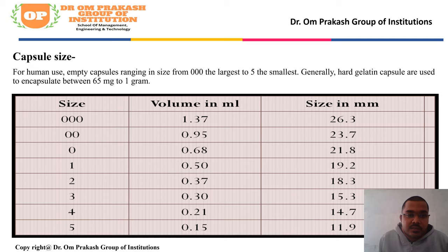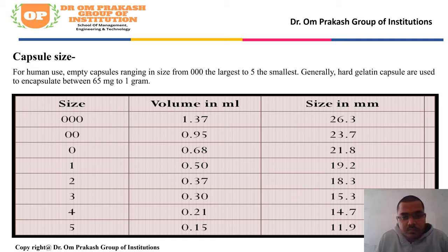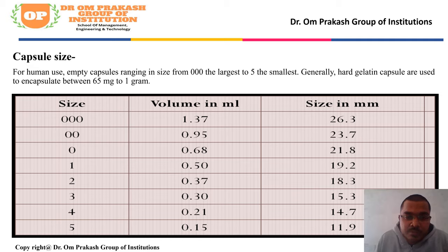The next point is capsule size. In the table, the capsule sizes mentioned are 000, 00, 0, 1, 2, 3, 4, and 5. The volume we can add in each size is: 1.37, 0.95, 0.68, 0.50, 0.37, 0.30, 0.21, and 0.15 mL respectively.